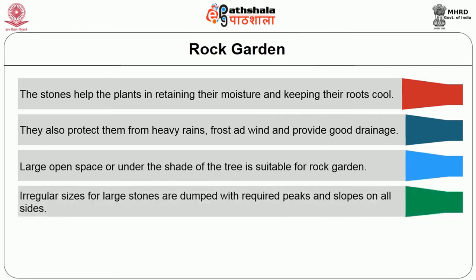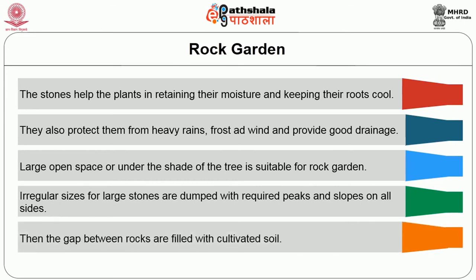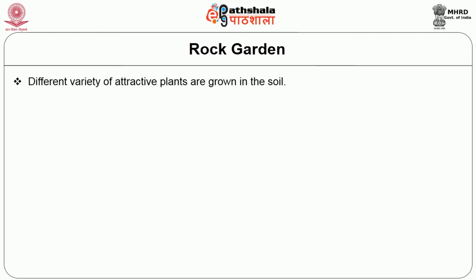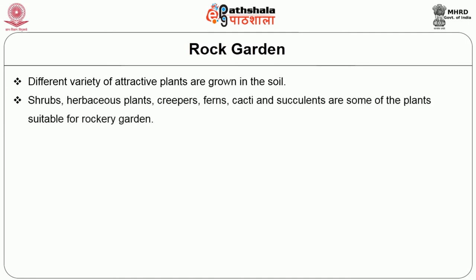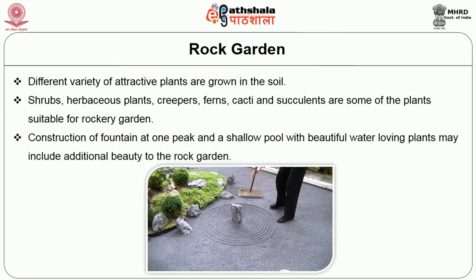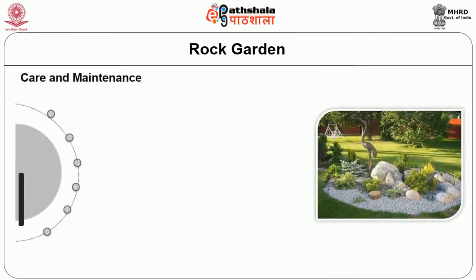The stones also protect plants from heavy rains, frost and wind and provide good drainage. Large open spaces or under the shade of trees are suitable for rock gardens. Irregular sizes of large stones are arranged with required peaks and slopes on all sides. The gaps between rocks are filled with cultivated soil. Different varieties of attractive plants are grown in the soil — shrubs, herbaceous plants, creepers, ferns, cacti and succulents are some of the plants suitable for a rockery garden. Construction of a fountain at one peak and a shallow pool with beautiful water-loving plants may add additional beauty to the rock garden. Japanese rock gardens, also known as zen gardens, have special features like moss, pruned trees, bushes, water pool and very few plants.